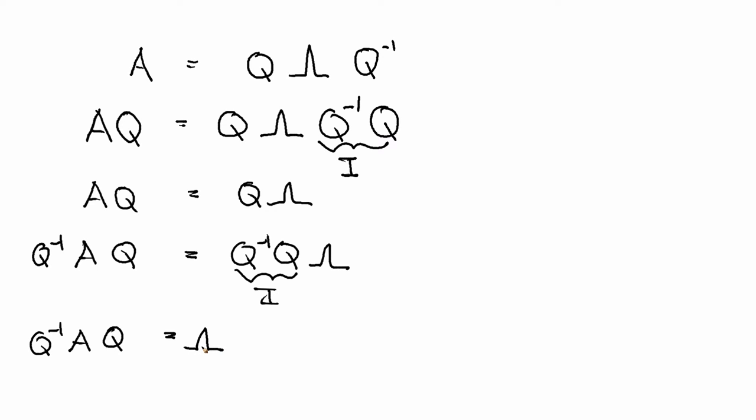Well, what was special about lambda? Other than that it contained the eigenvalues, more generically, what was it? It was a diagonal matrix, right?